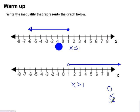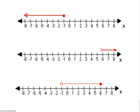An open circle is going to be represented with either a less than or greater than sign, and a closed circle means equal to — so it's less than or equal to, or greater than or equal to. That solid dot means equal. Here are a couple more — go ahead, hit pause, check yourself, and make sure you've got these.